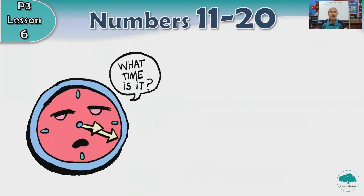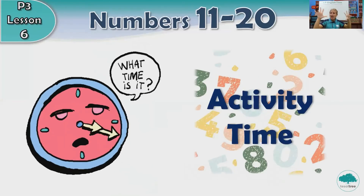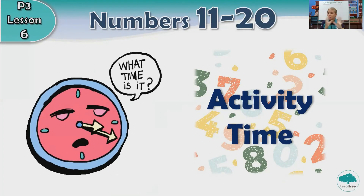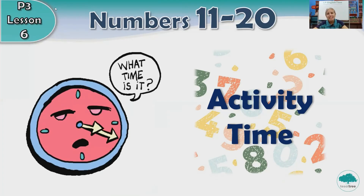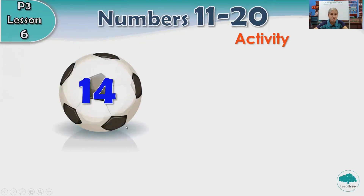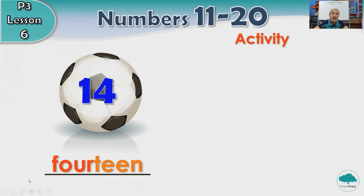What time is it? It's activity time. Now you know how to spell your numbers. Let's see the activity. For this activity, you need to look at the picture. What number is on the ball? Can you guess? It's number 14. Well done. How do you spell 14? F-O-U-R-T-E-E-N. 14.